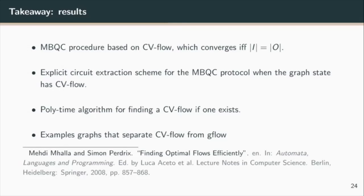We have some other side results. We have a polynomial time algorithm for finding a CV flow on a graph with a CV flow if one exists, and this is just essentially an algorithm for the cubic case which was first published by Mhalla, Murao, Perdrix, Rennela, and Wadsworth. We also have examples of graphs that separate the CV flow cases from G flow, so these are graph theoretically different conditions.